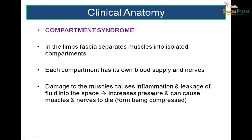Compartment syndrome: in the limbs, fascia separates muscles into isolated compartments, each with blood supply and nerves. Damage to muscles in these compartments can cause inflammation and fluid leakage, creating increased pressure in the compartment and leading to compression of the nerves.